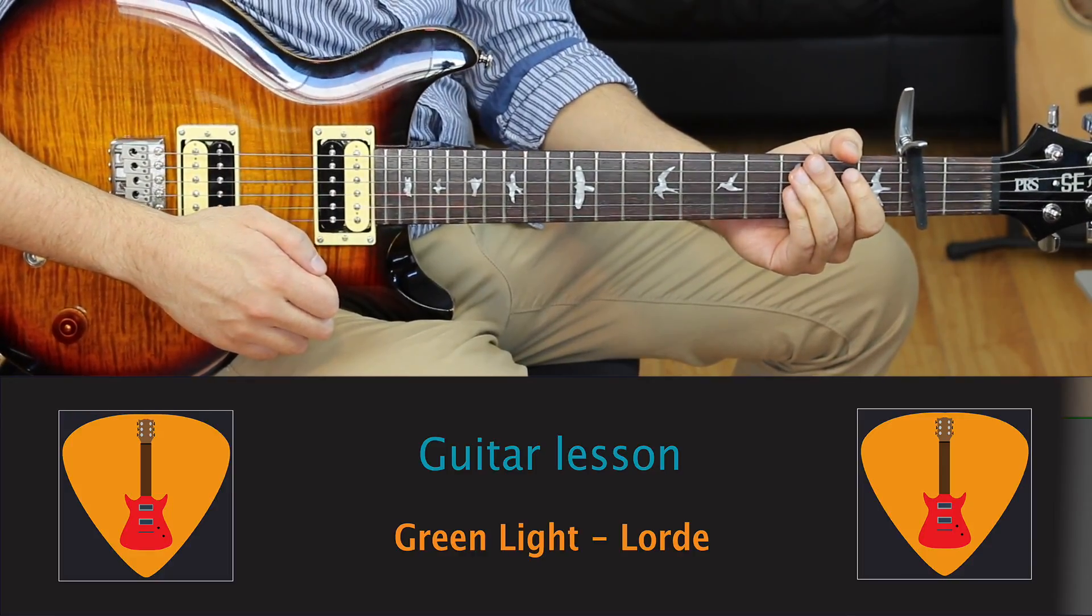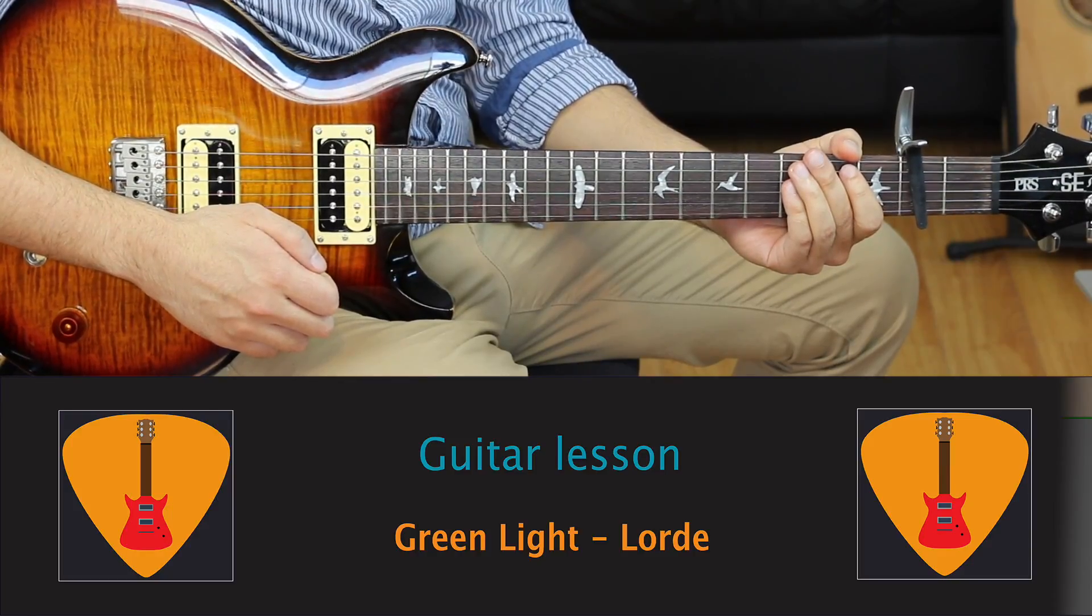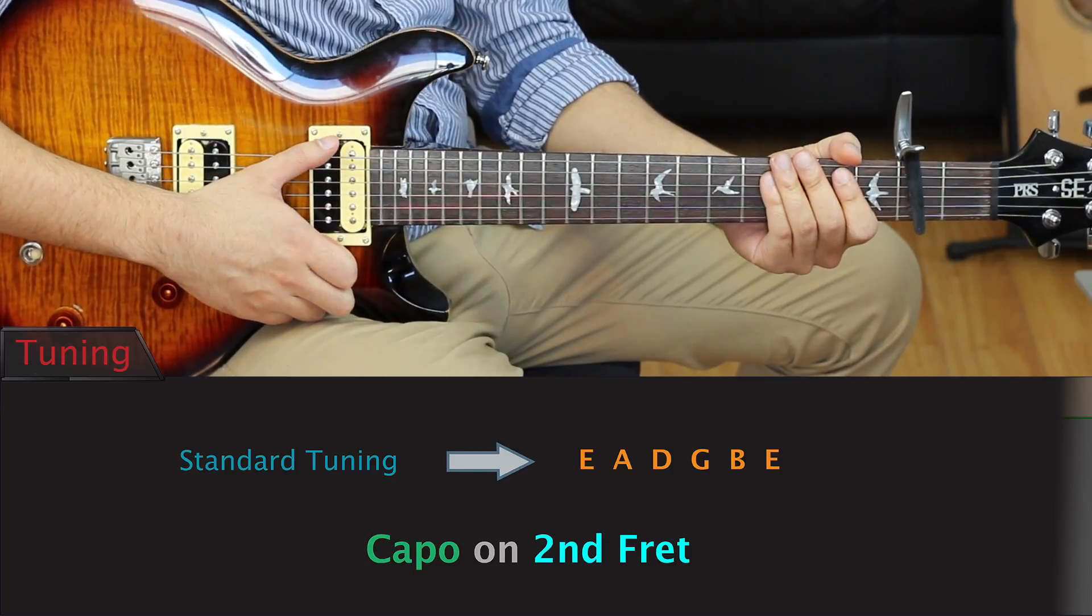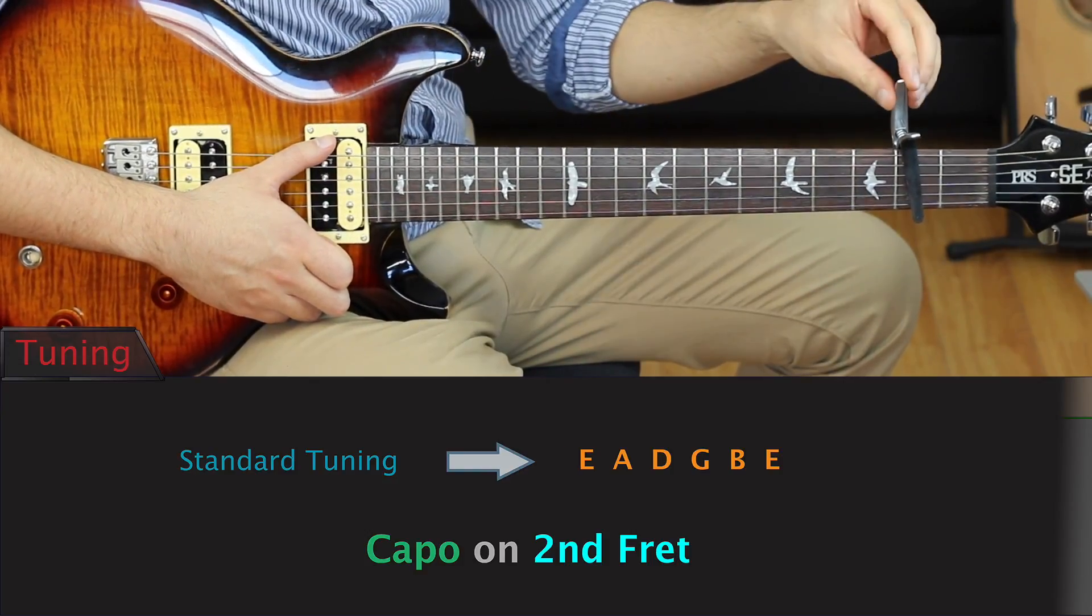This song consists mainly of open chords and has a relatively simple strumming pattern, which makes it a great choice for beginners. If you want to play along with the album, make sure your guitar is in standard tuning with a capo on the second fret.